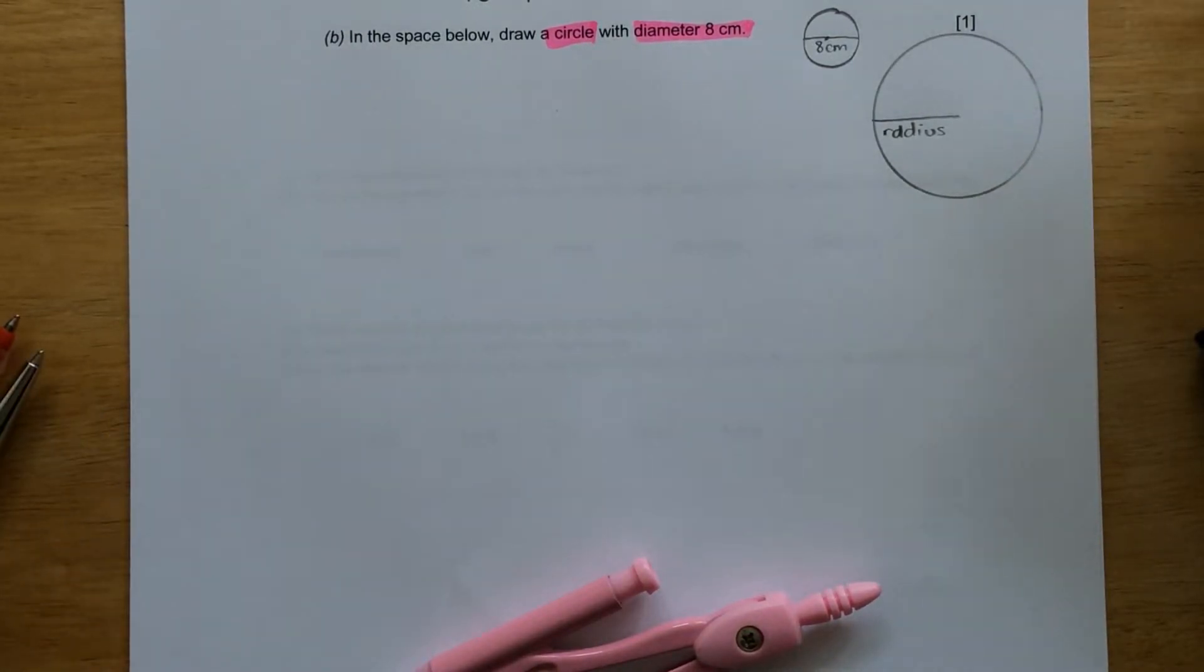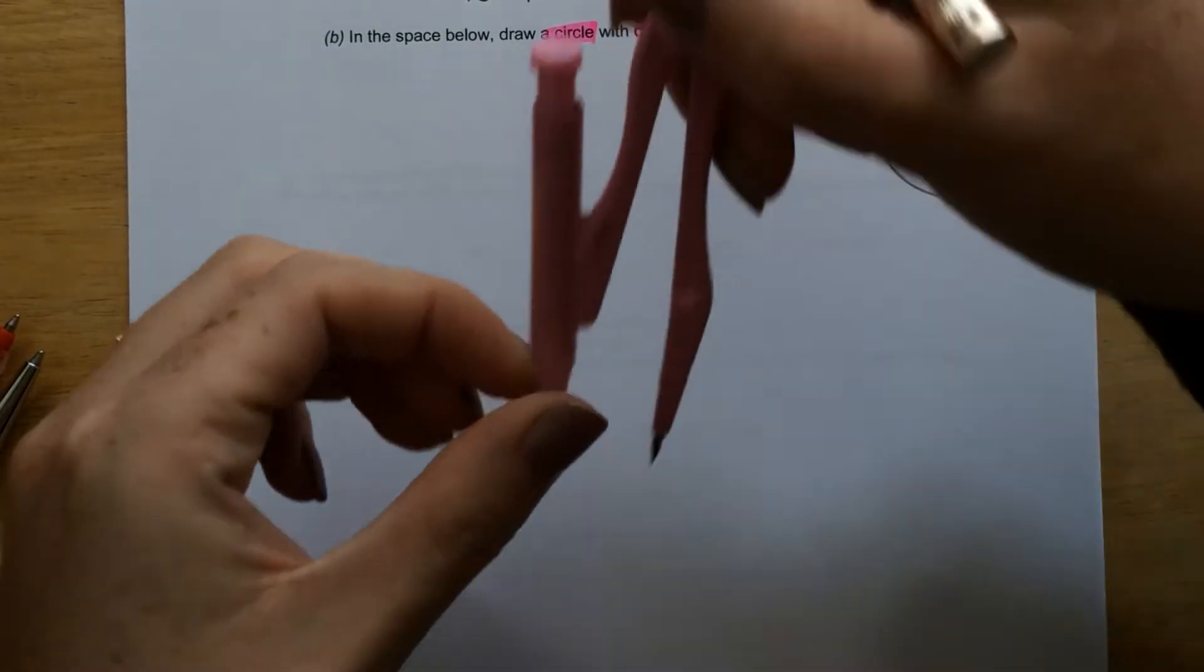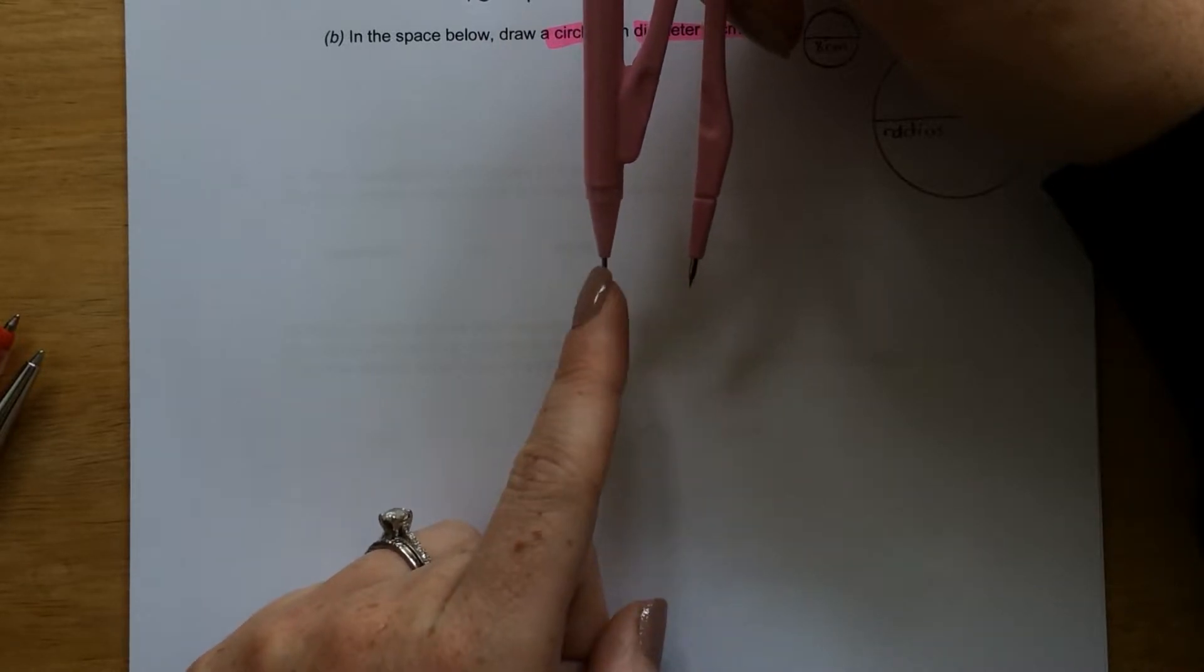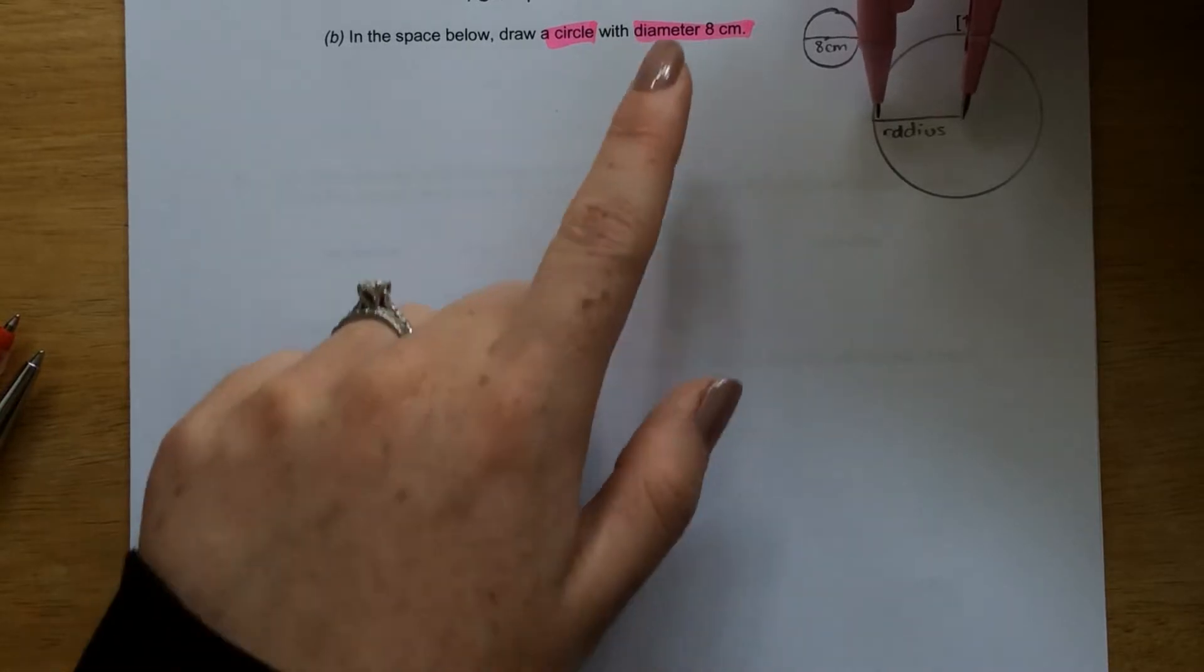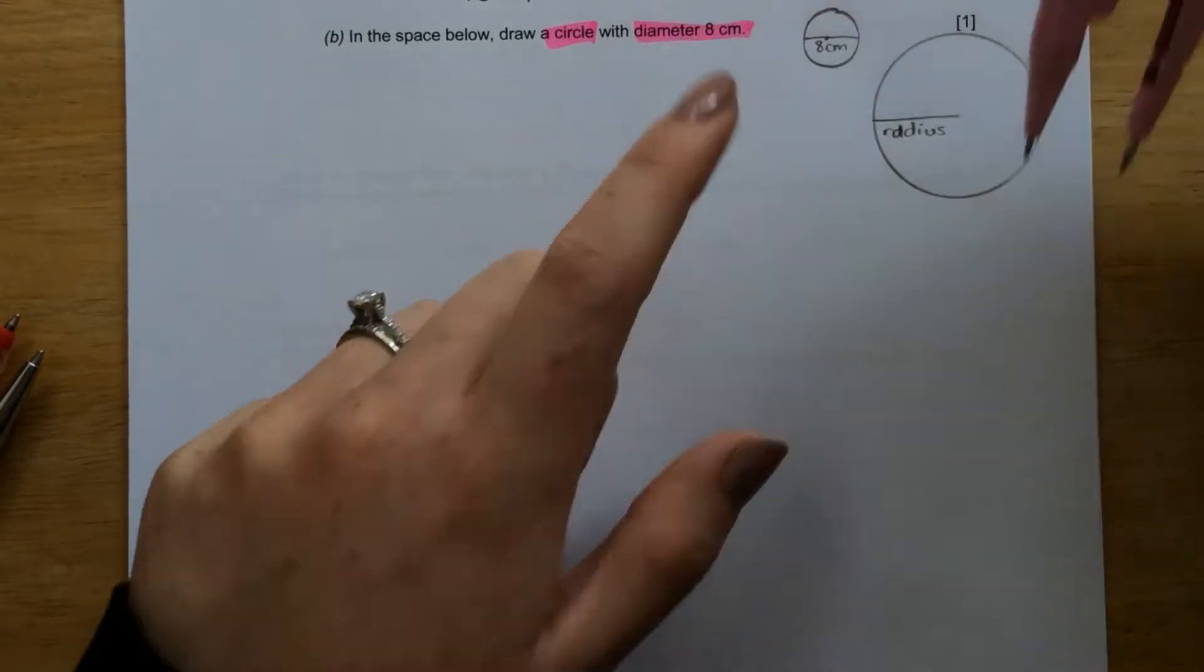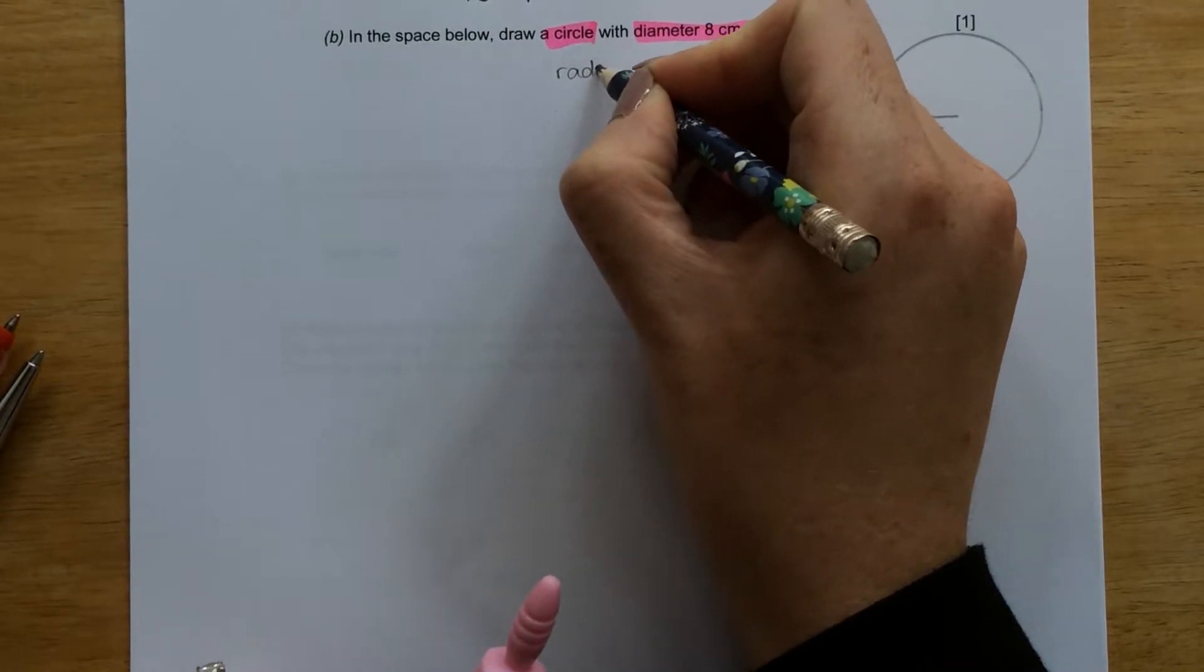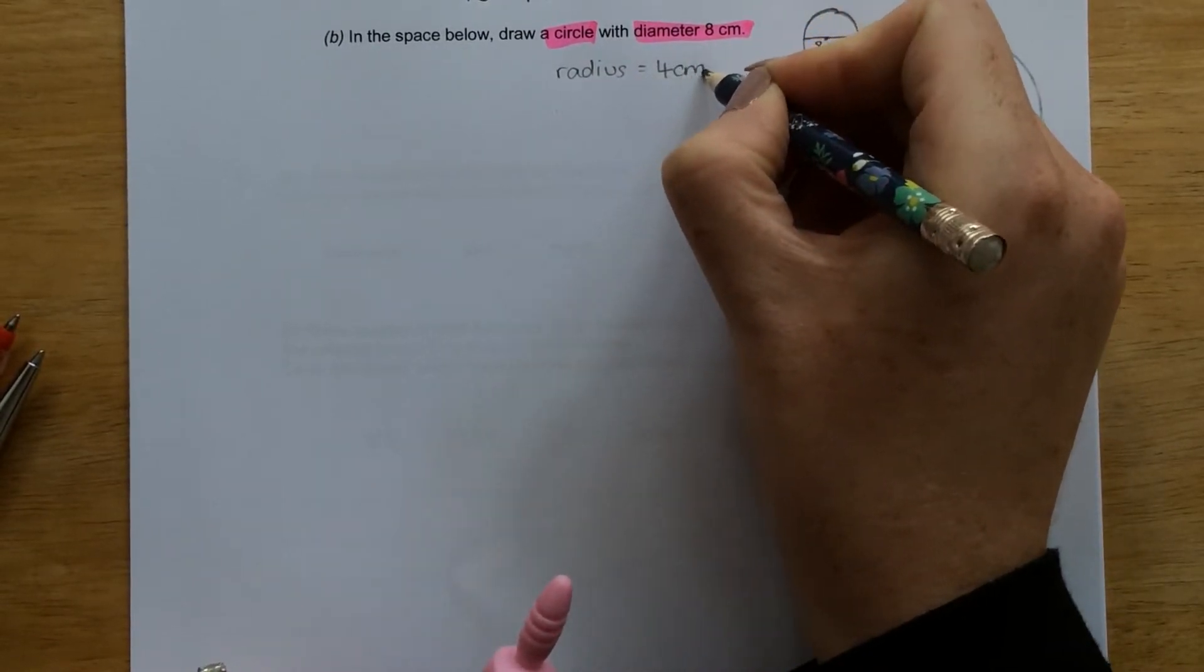So to draw an accurate circle with a diameter of 8 centimetres, I need to measure my compass, the point between the point here and the pencil, so that is exactly half of the diameter. So the diameter is 8, so I need to half that. So the radius must be 4 centimetres.